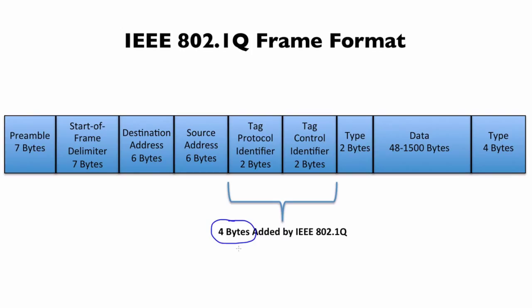Inside of these four bytes we have 12 bits that identify the VLAN to which we belong. So we've got 12 bits identifying the VLAN.